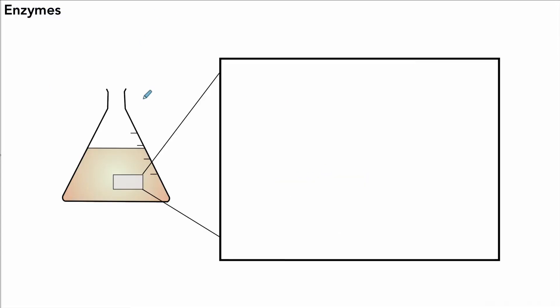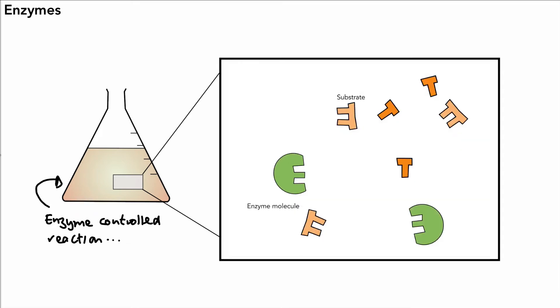So let's have a look at what actually goes on when an enzyme is taking part in a chemical reaction. In this flask we've got an enzyme controlled reaction going on. We have enzyme molecules in green and in the paler orange color we've got something called the substrate. That's the substance that the enzyme works on, and here you're going to see why the active site or the shape of the active site is so important.